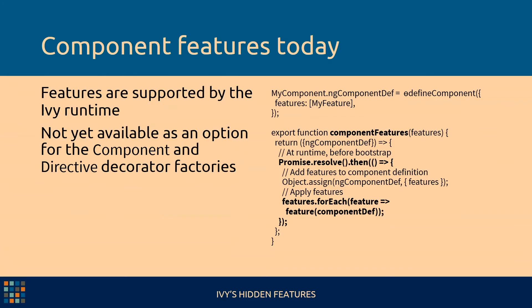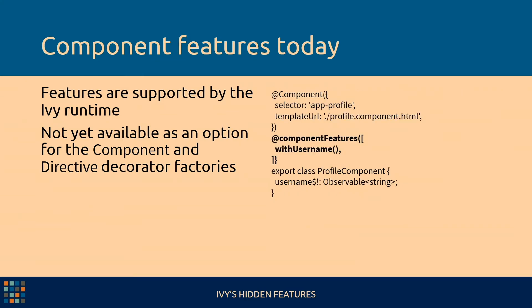We can create a small and pretty simple decorator called component features. It just ensures that we're doing this at runtime, not compile time, but before bootstrap. So we add the features and apply them to the component definition, and now we're golden. For the rest of this talk, every time there's a features option, just think we're using this decorator instead. This is what it looks like when we actually apply it — very similar, but it's not in the official Angular public API yet.